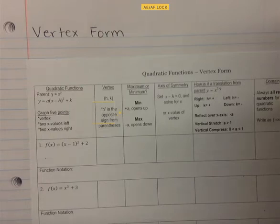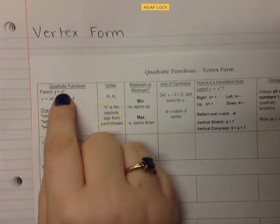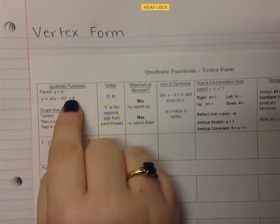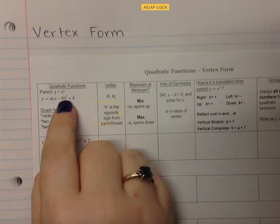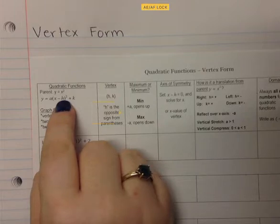This video is on quadratic functions. We're going to be talking about vertex form. Vertex form will actually give you your vertex inside the equation — you just have to pull it out. The parent function is always y equals x squared. Vertex form looks very similar to function notation because function notation tells you how the graph is transformed from the parent function of x squared, how it's moved from the origin, and function notation uses the vertex as its key point. So function notation is very similar to vertex form.